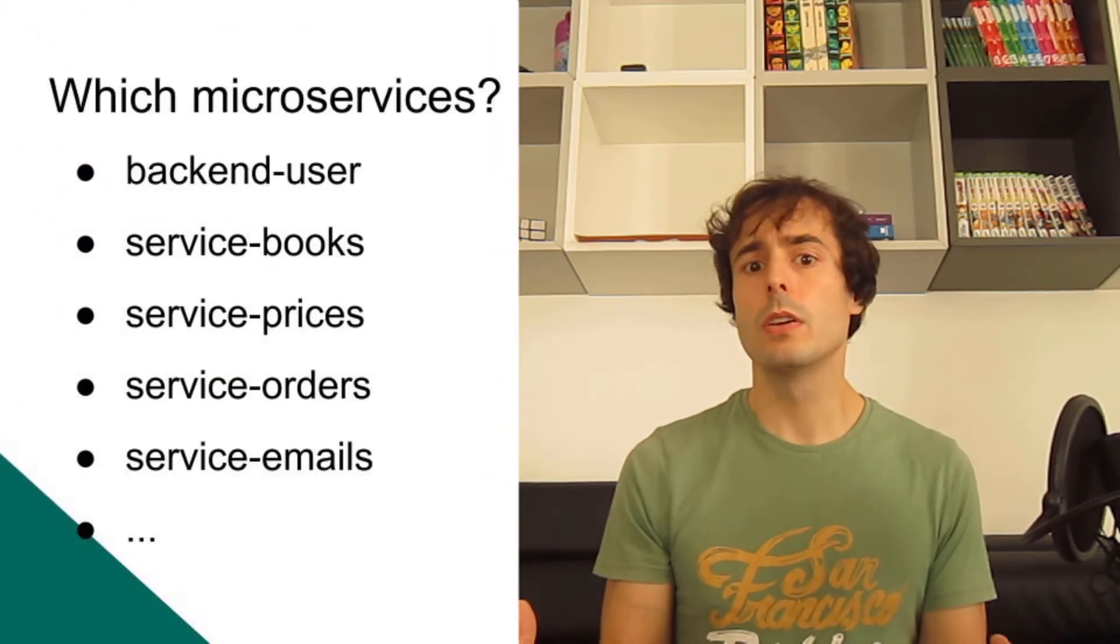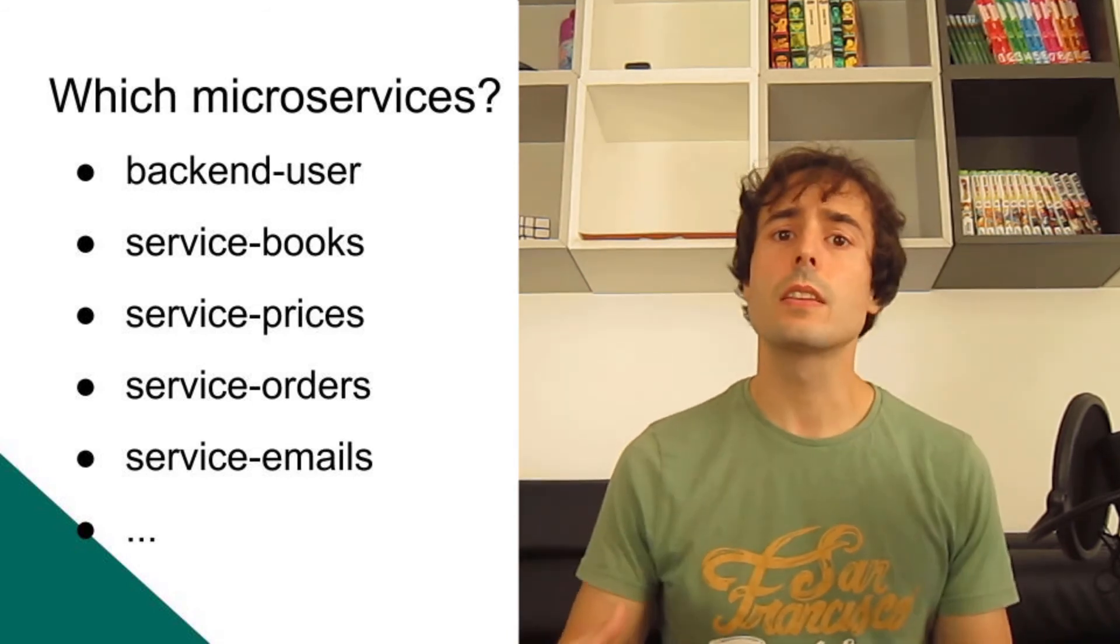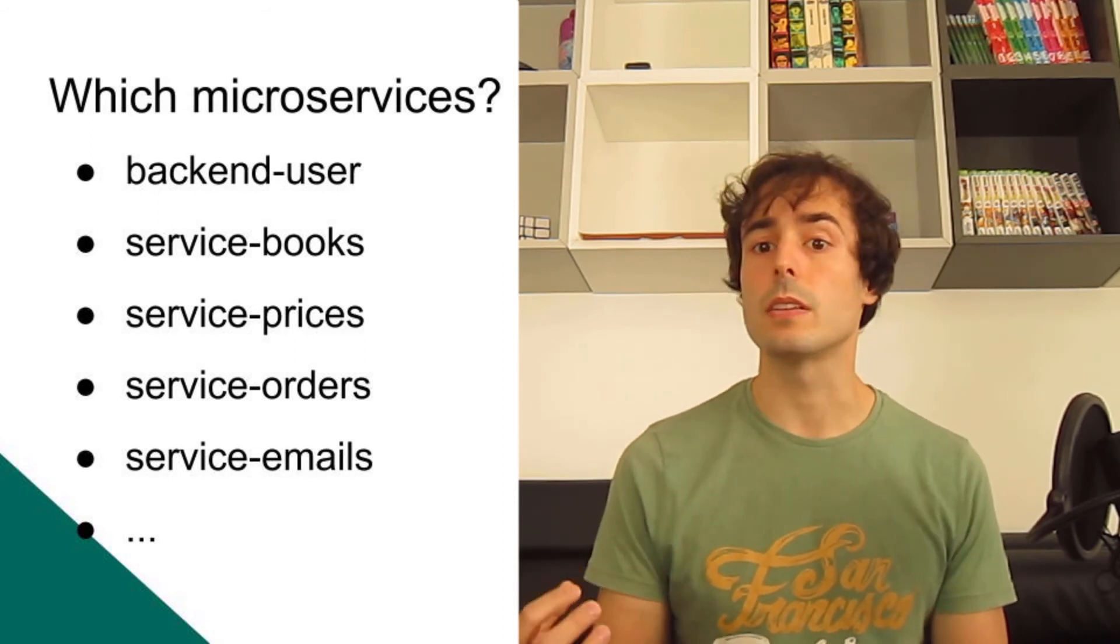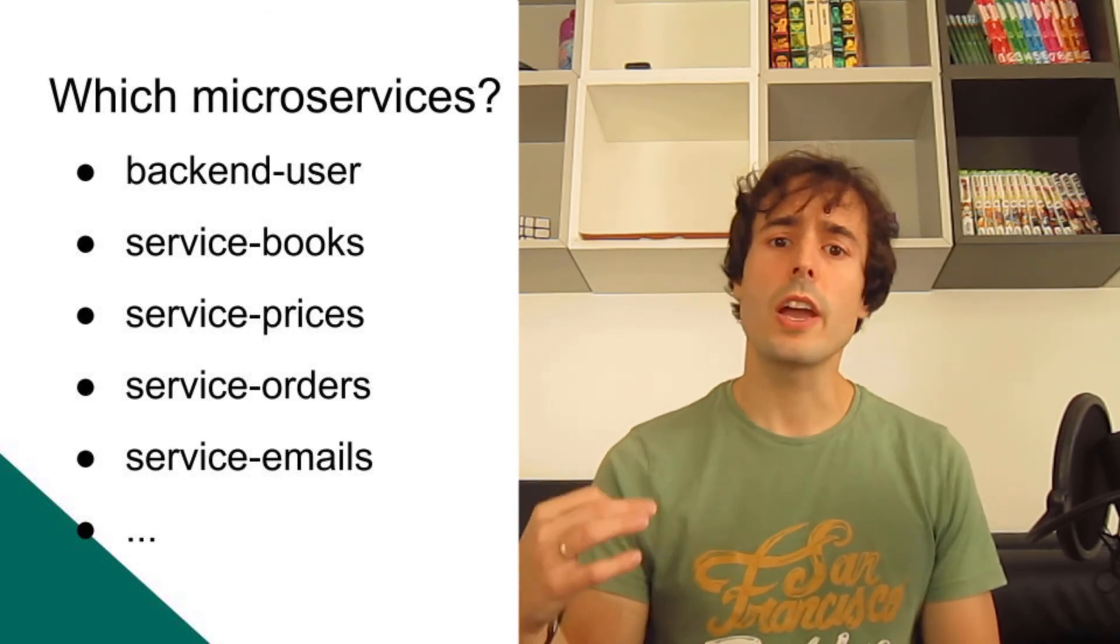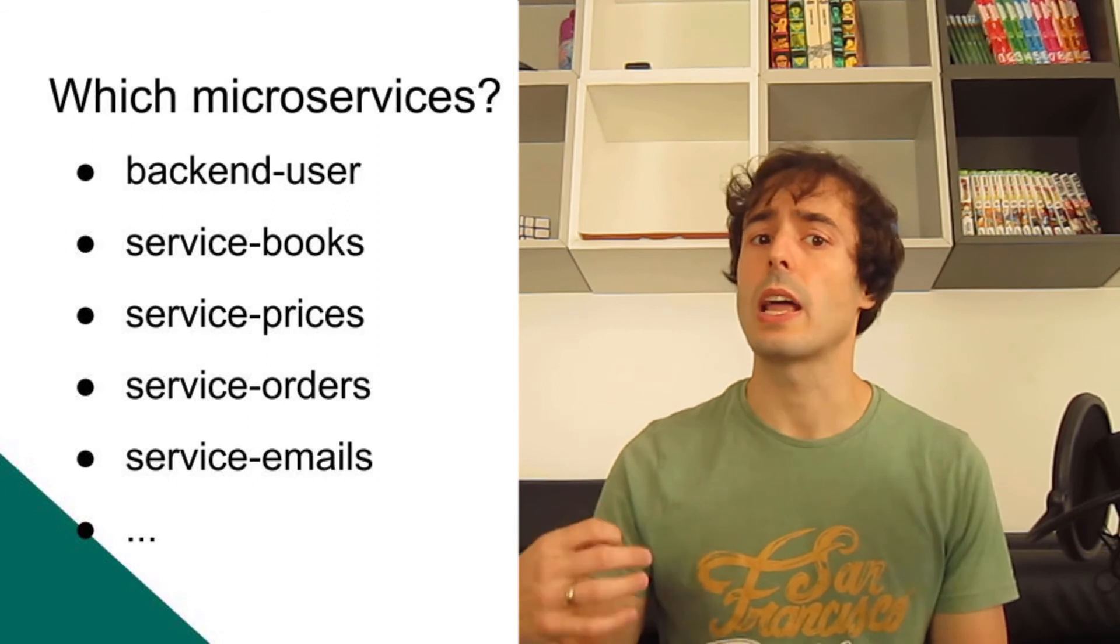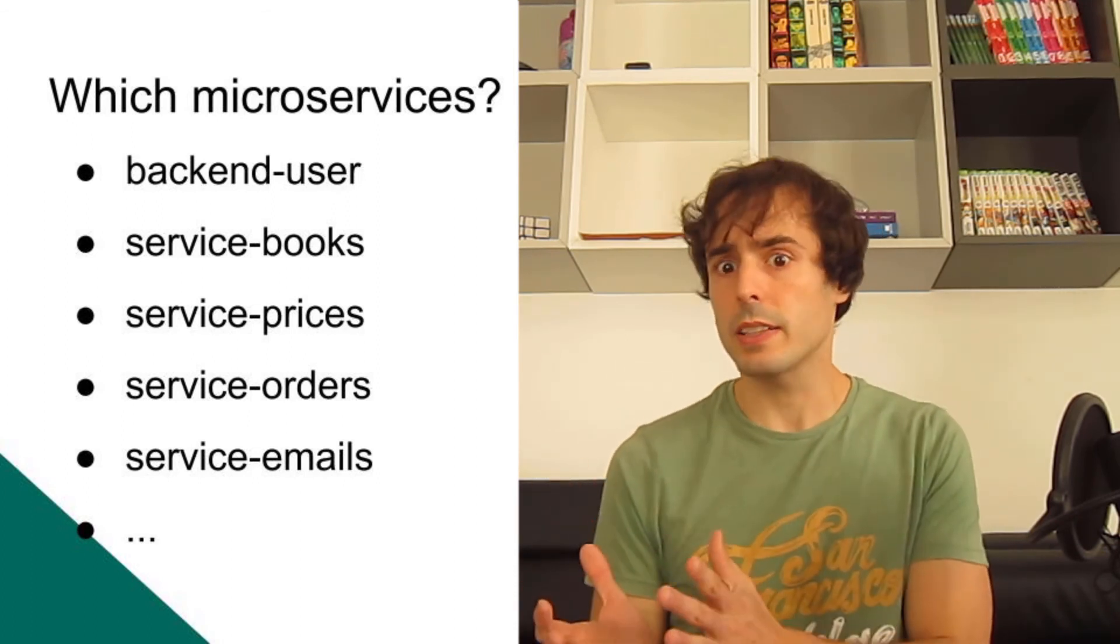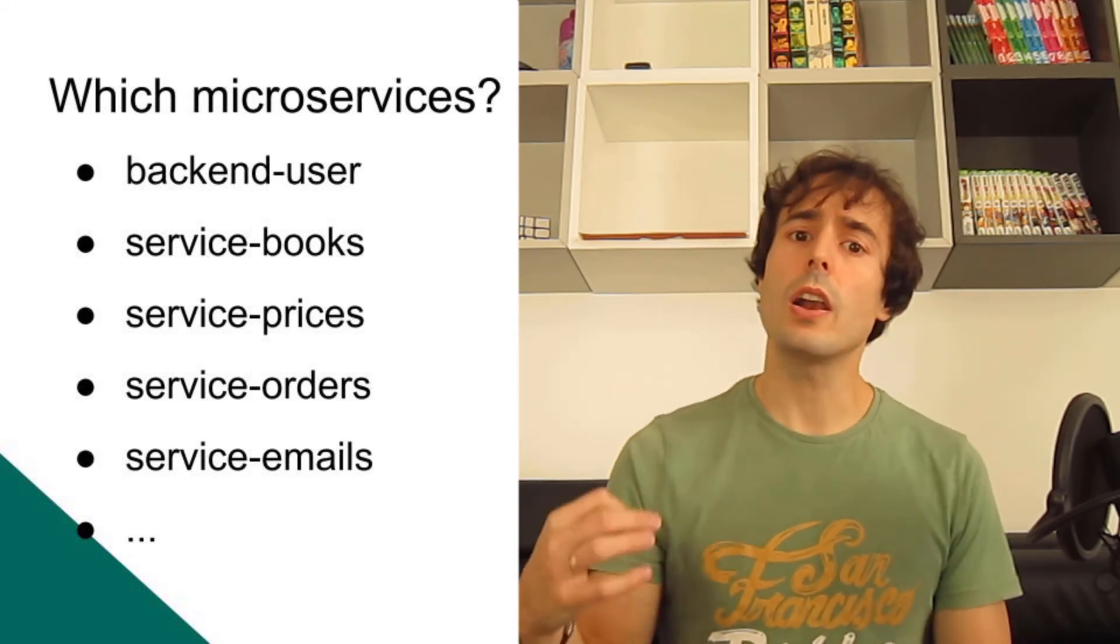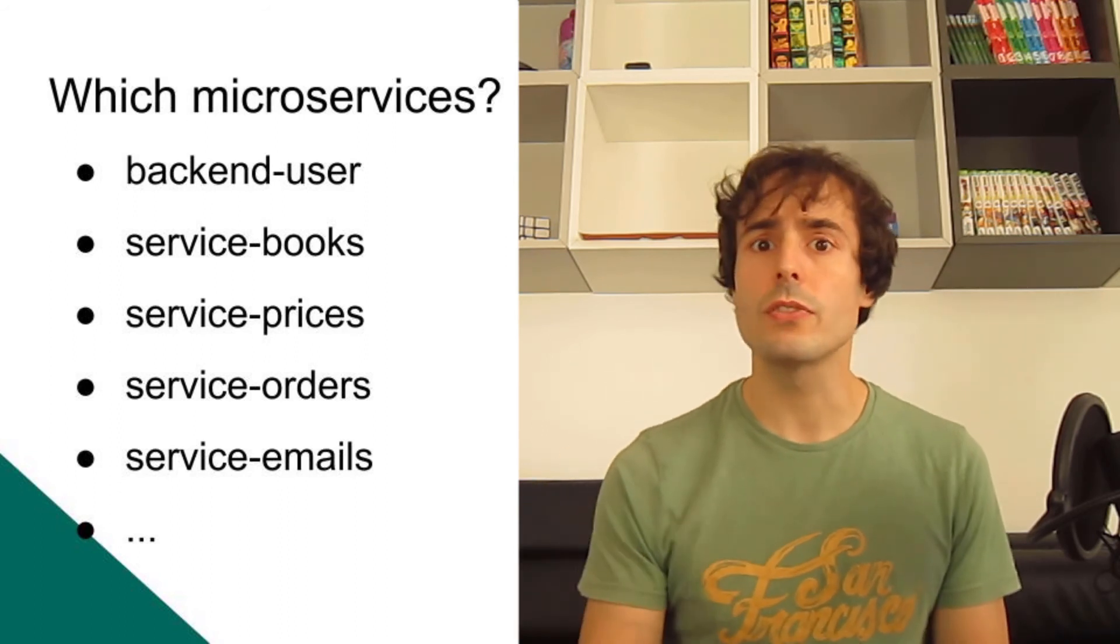I've already talked about that. But which microservices may I need in a bookstore website? As I said, the public router. I will name it Backend User. It's a backend, it's the entry point of all the requests. And User because it's the entry point of the user requests. I may have another application for admin users or for B2B users, which will be Backend Admin or Backend B2B. This first microservice will be the only one with public access, which means that this one will handle most of the security.